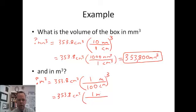So 353.8 centimeters cubed. 1 cubed is 1. 100 cubed is 1,000,000. In this case, I'm going to divide by 1,000,000.